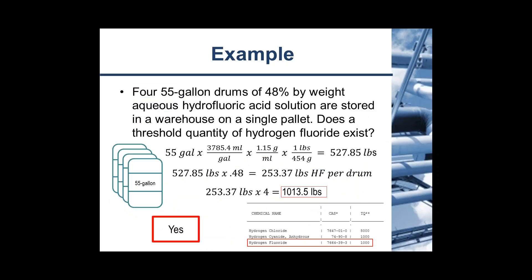For the final example, we have four 55-gallon drums of a 48% by weight aqueous hydrofluoric acid solution stored in a warehouse on a single pallet. Does a threshold quantity of hydrogen fluoride exist? The storage of four drums on a single pallet is considered a single process, as a release in one drum may cause a release in all four drums due to their close proximity. To see if the threshold quantity is met, you must calculate the total hydrofluoric acid in all four drums. Each drum contains 55 gallons — approximately 250 pounds of hydrofluoric acid per drum — times four gives approximately 1,135 pounds total. Looking up hydrofluoric acid in Appendix A of OSHA's PSM standard, the threshold quantity is 1,000 pounds. Because the calculated weight exceeds the threshold quantity, this is indeed PSM-regulated.